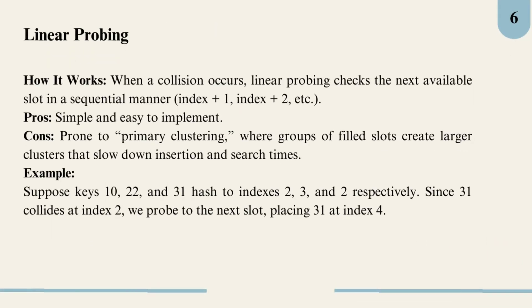Linear probing is the simplest probing technique in open addressing. Here's how it works: if a collision happens, we just check the next slot in sequence, one position at a time, until we find an empty slot. It's easy to implement but can lead to something called primary clustering, where clusters of filled slots form, slowing down the search and insert times as the table fills up. For example, if two items hash to index 2, one of them goes to index 3, and if index 3 is taken, we move to index 4. It's straightforward but not ideal in cases of high collisions.